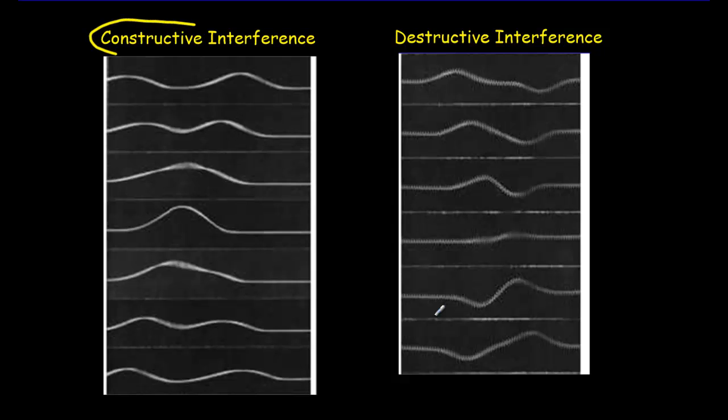Here's some strobe photographs of constructive interference. We've got two pulses that are upwards, they're in the same direction. And when they get on top of each other right here, you get a much bigger amplitude. That's constructive interference when the two pulses are in the same direction.